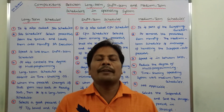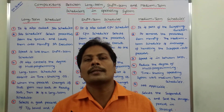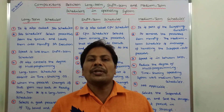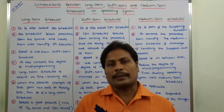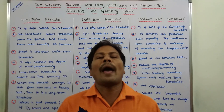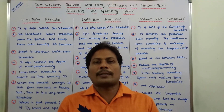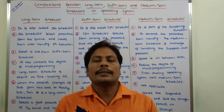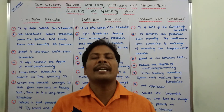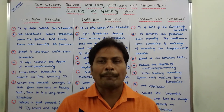The first difference: long-term scheduler is also known as job scheduler. Short-term scheduler is also known as CPU scheduler. Medium-term scheduler is the part of the swapping function. Swapping is when a suspended process is removed from the main memory and the image of the suspended process is saved in the secondary storage.